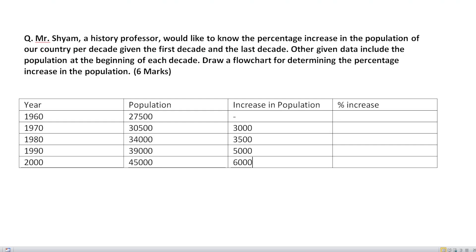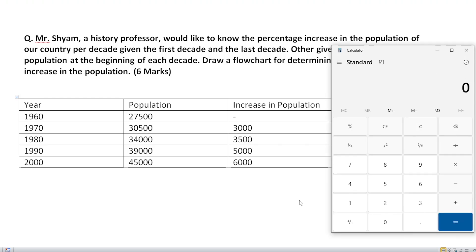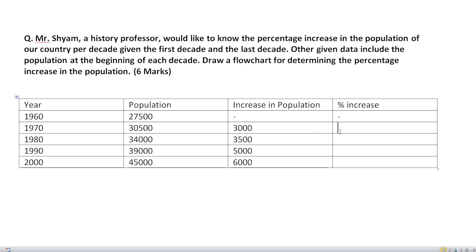Now we calculate the percentage increase. We cannot calculate it for the starting decade since there is no previous decade value. In 1970, increase in population is 3,000, so percentage increase equals increase divided by previous decade's population (27,500) multiplied by 100, which equals 10.90. In 1980 it is 11.47, in 1990 it is 14.70, and in 2000 it is 15.38.